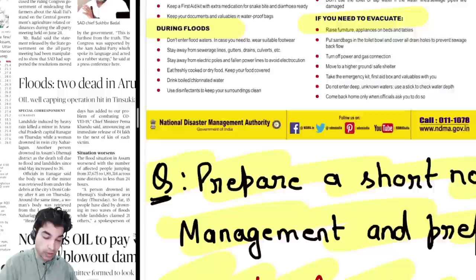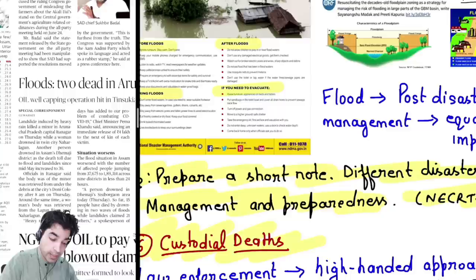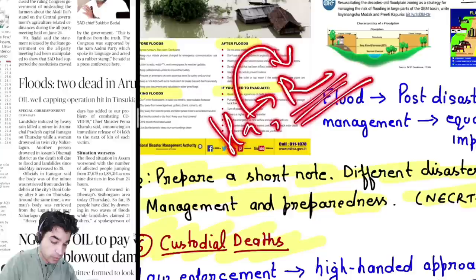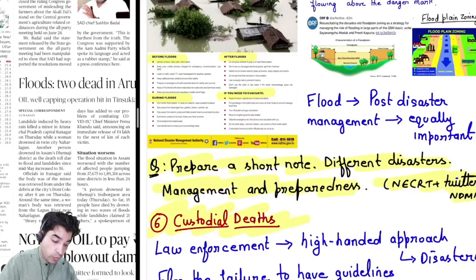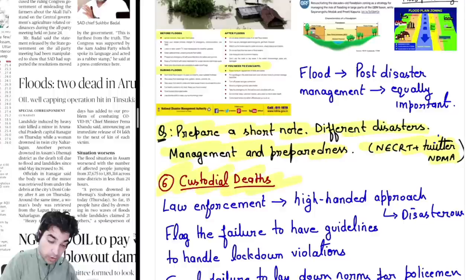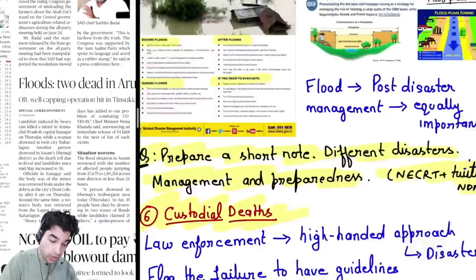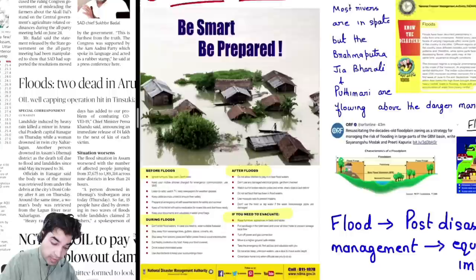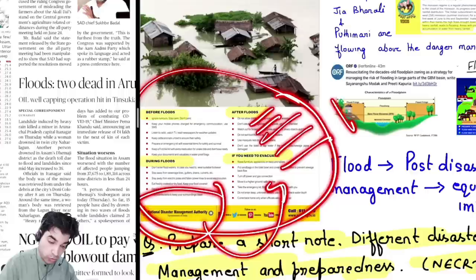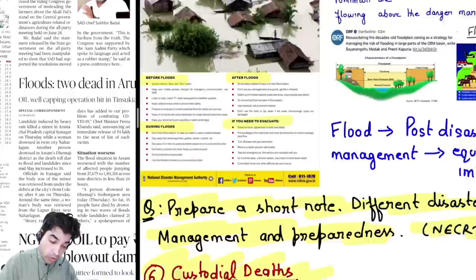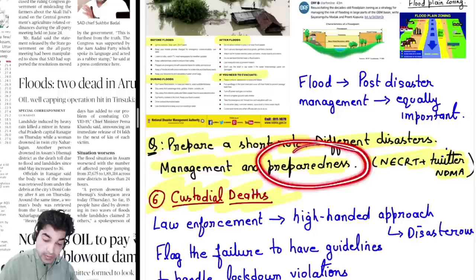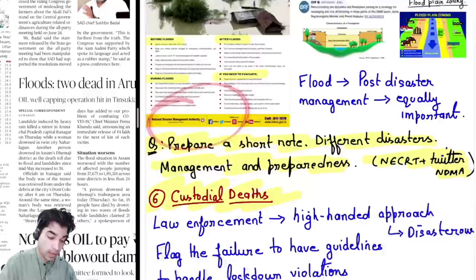Be smart and be prepared — this has been issued by the National Disaster Management Authority. In Class 11 Indian Geography, the last chapter is dedicated to hazards and disasters — land-based, air-based, and water-based disasters are all given there in a tabulated form. It is very important to prepare a short note on different disasters, their management, and preparedness. Use these official NDMA guidelines — match your answer writing to these official guidelines. Use NCRT data and NDMA Twitter data as well.